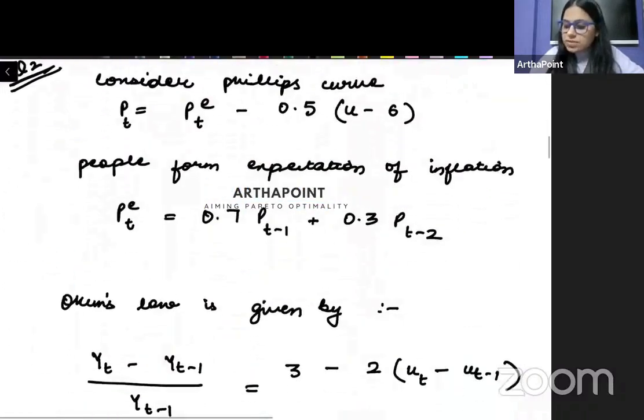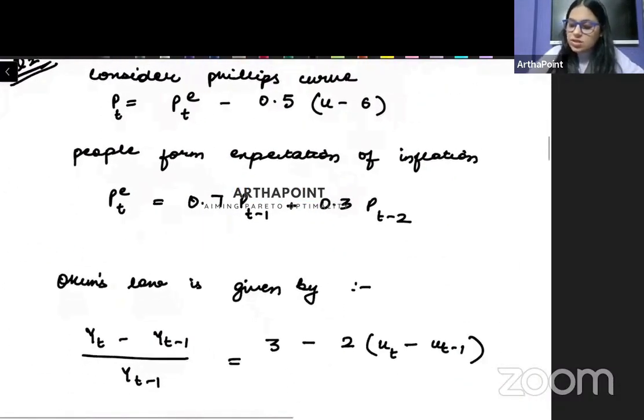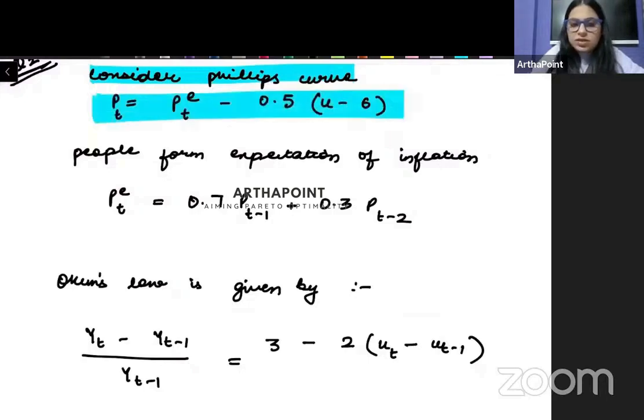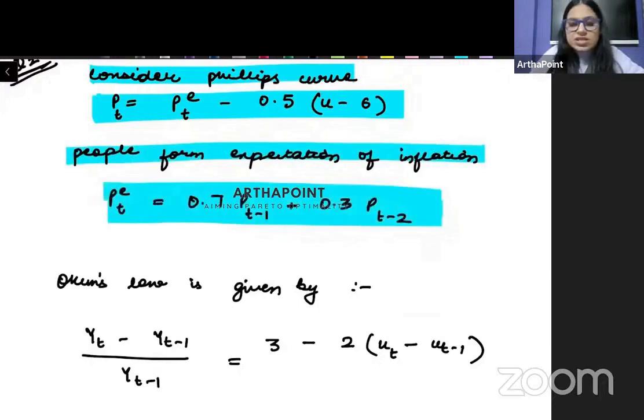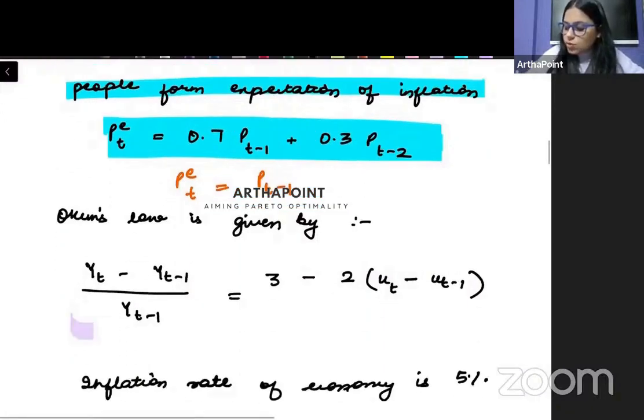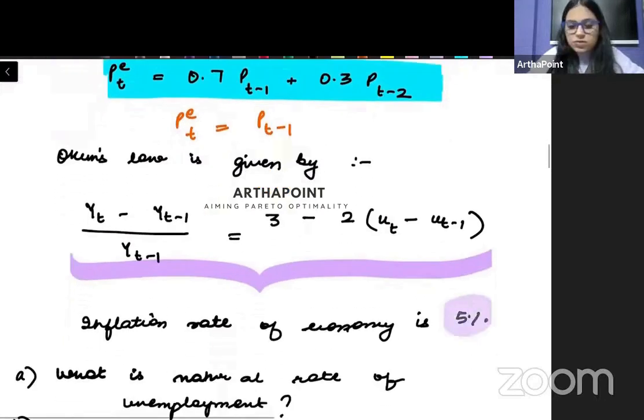The second kind of question that can be asked in exam will look something like this. Pay attention. You will be given the equation of a Phillips curve. And you may be given how expectation is formed. So in this case, suppose it says that people form expectation using this relationship. They will give you an expectation relationship. A lot of times, if you look at Delhi University past year papers, this year's expected value will be given as last year's price. Then you will be given an Okun's law equation also.